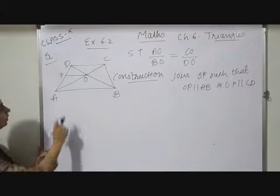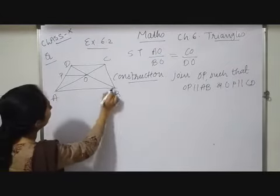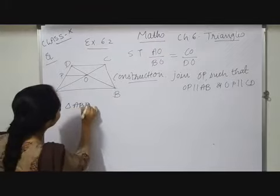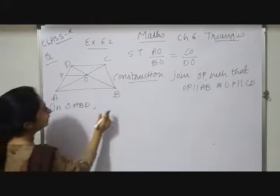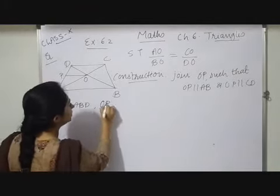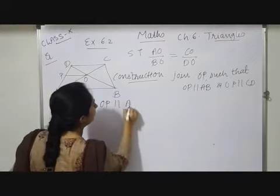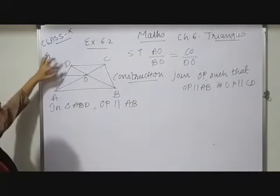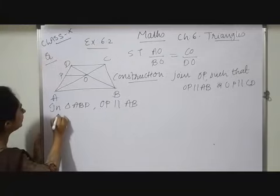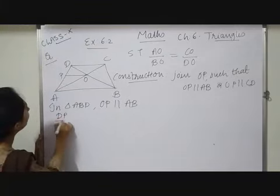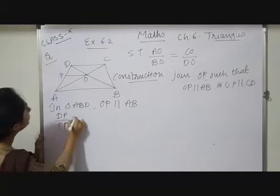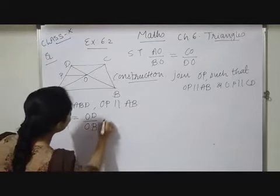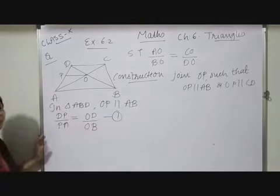Now let me take triangle ABD. In triangle ABD, OP parallel AB by construction. Based on the Basic Proportionality Theorem, I can write: DP upon PA equals OD upon OB. Let this be equation number 1.